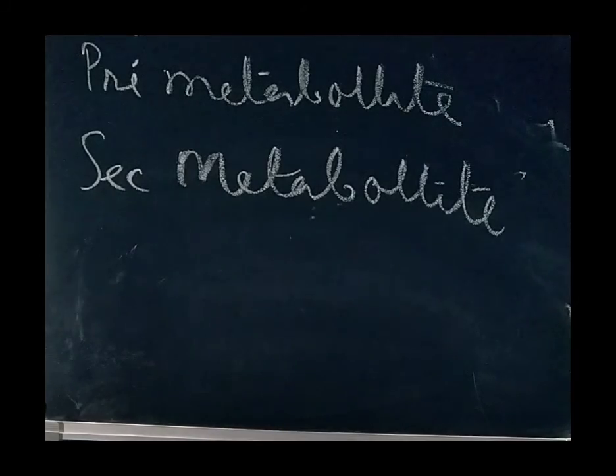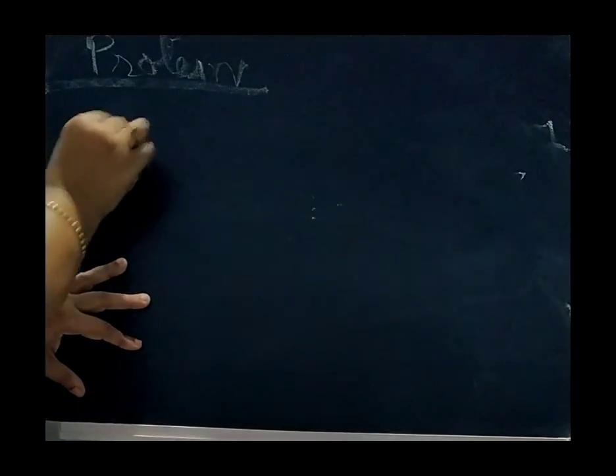Now next we will study the proteins. Proteins are made up of amino acids as building blocks. Amino acids are joined by peptide bond. Each protein is a polymer of amino acids. 20 types of amino acids are there like alanine, valine, arginine, leucine, histidine.